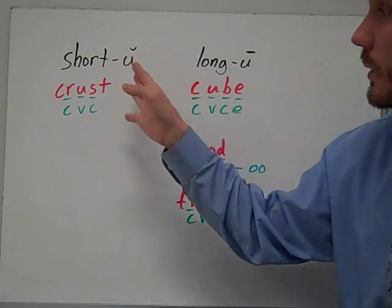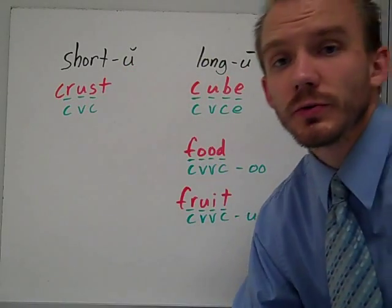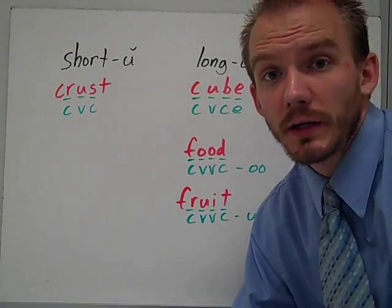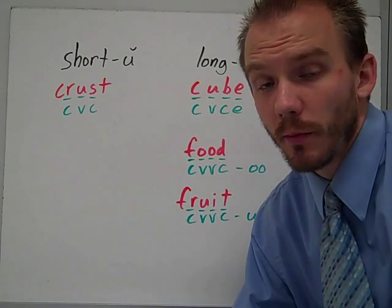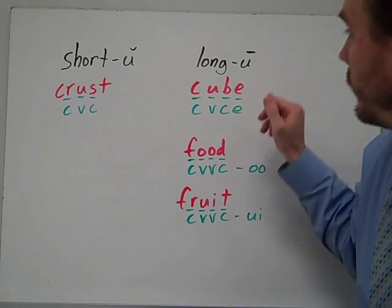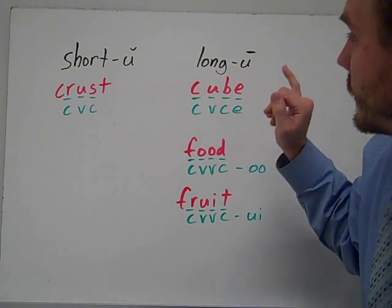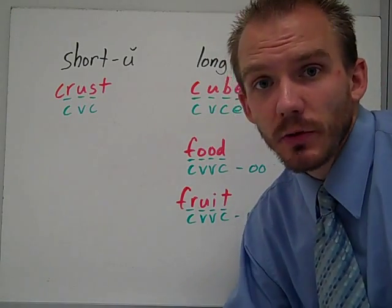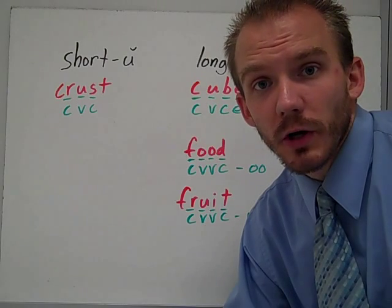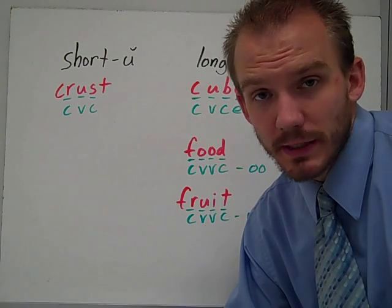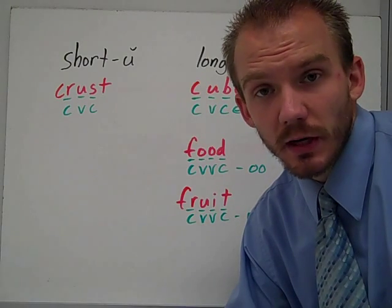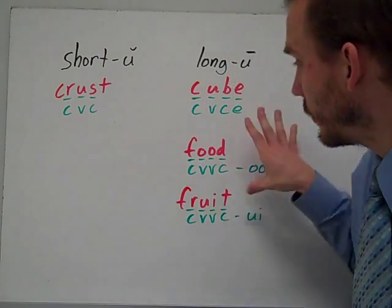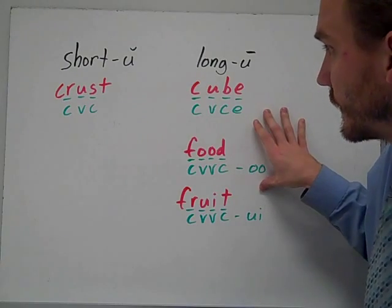Short U and long U. Short U always makes an 'uh' sound, like in the word umbrella. Whereas long U can make a 'you' sound or also more of an 'ooh' sound. So it's kind of complicated when you're hearing the long U's. We'll look at some examples.